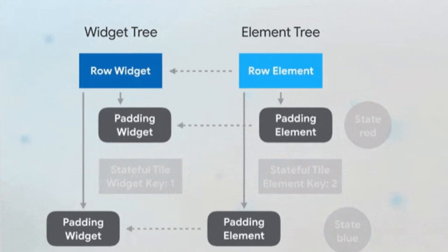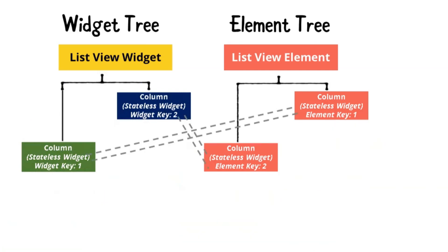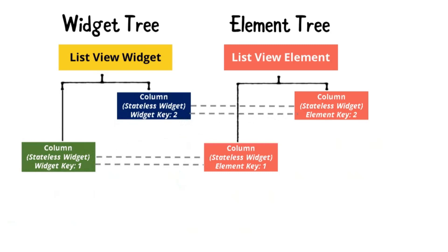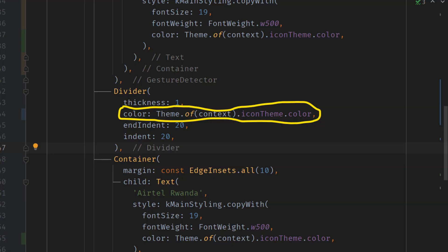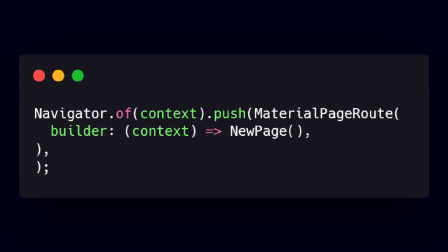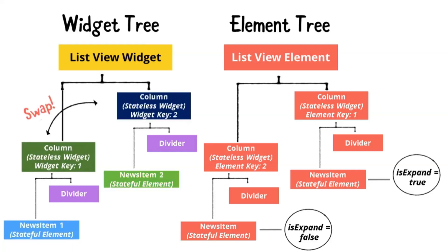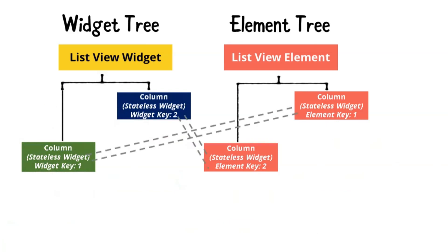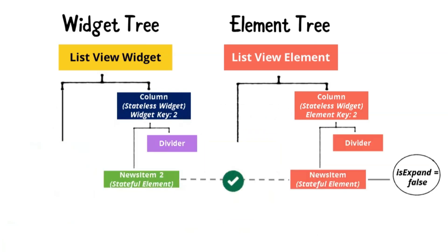Build context is most commonly used to look up where a specific widget is located in the widget tree. For example, when you are using Theme.of(context) or Navigator.of(context), you are looking up the widget tree to find the theme or navigation that coincides with the location of the current widget. Basically, it is saying where you are calling those functions from in any particular location.